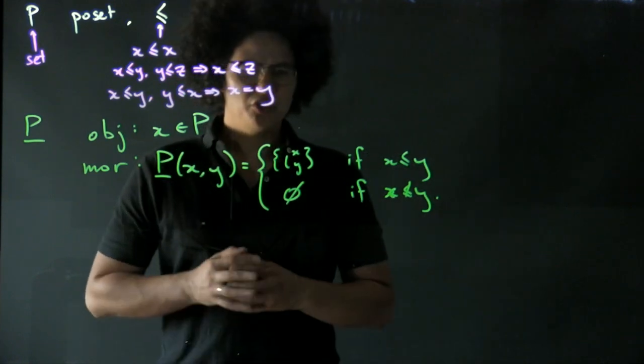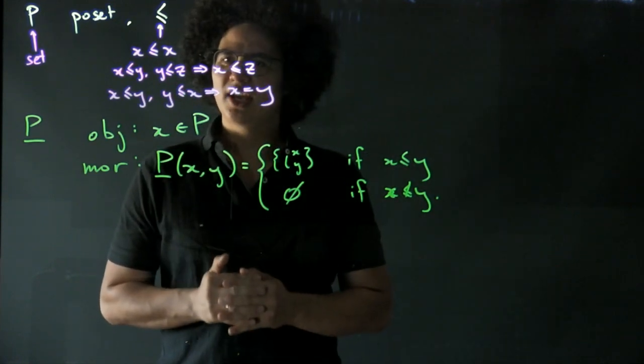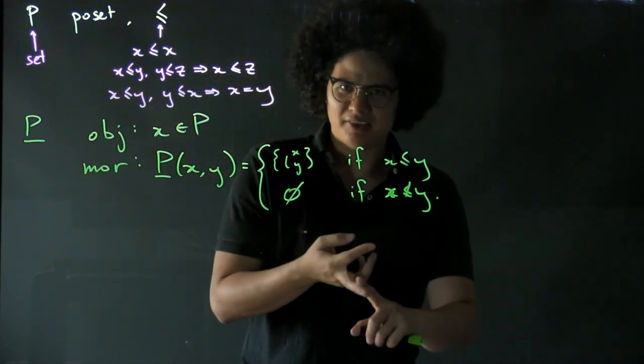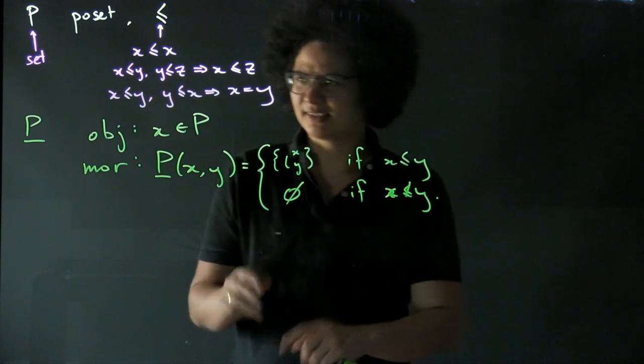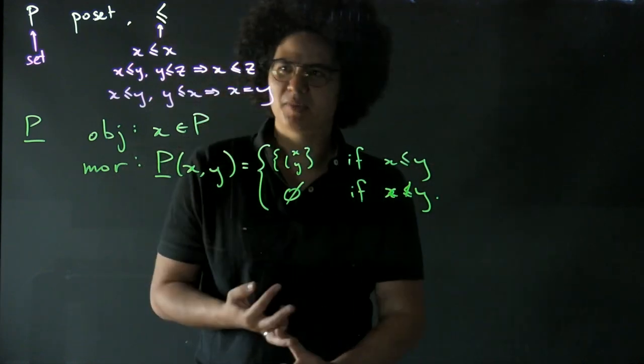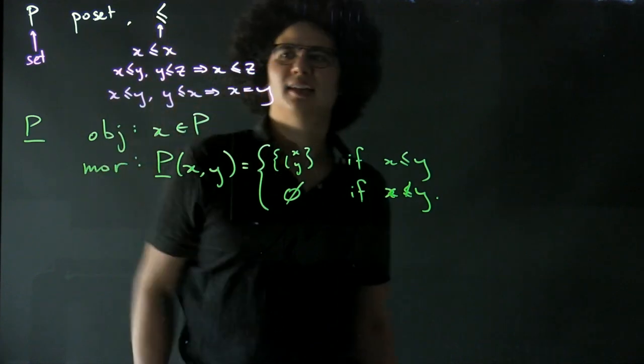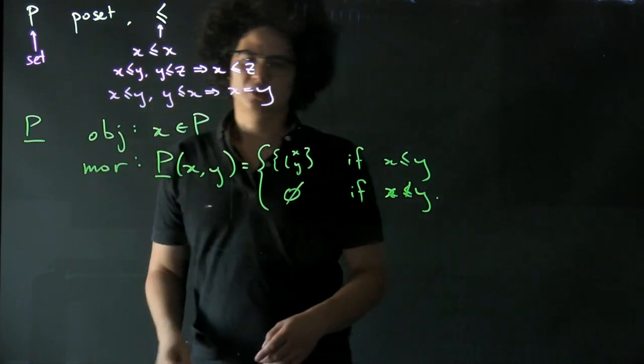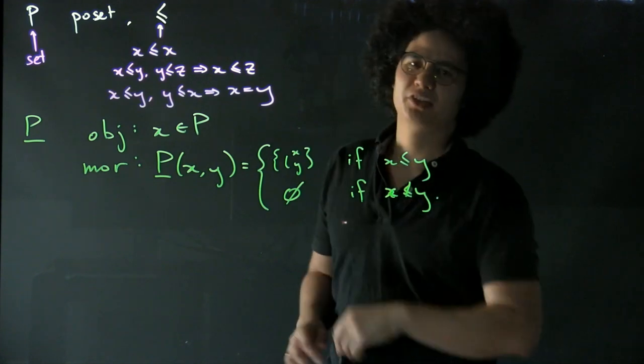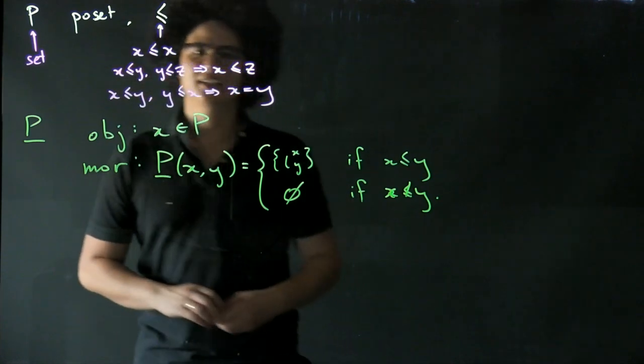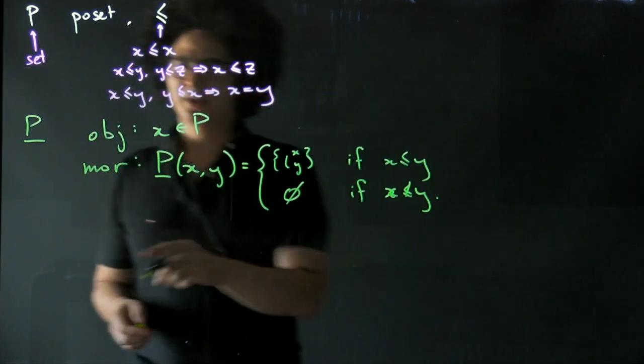And you should go ahead and check that you have a composition, that it's associative, and that you have identities, morphisms that act as identity morphisms, which all comes from the properties of the partially ordered relation. So that's one category.